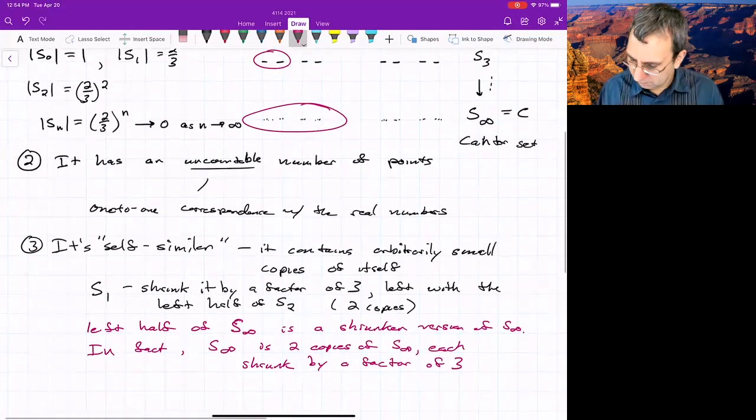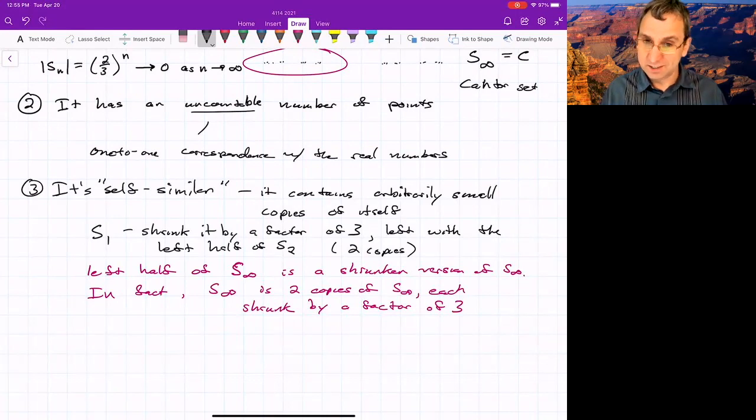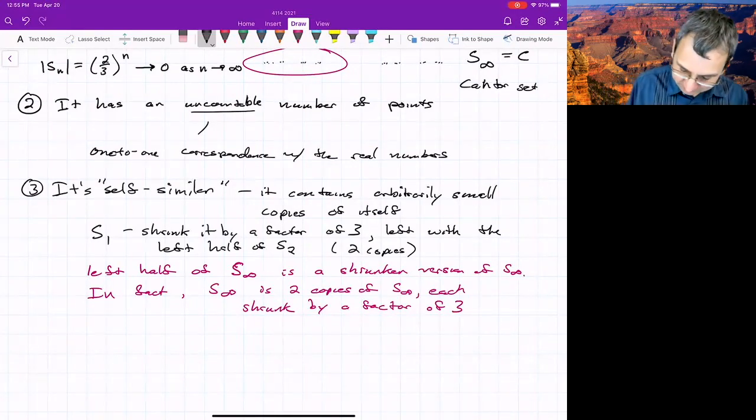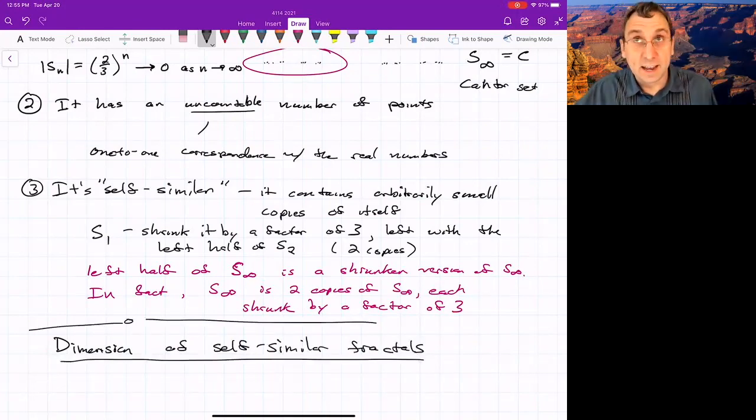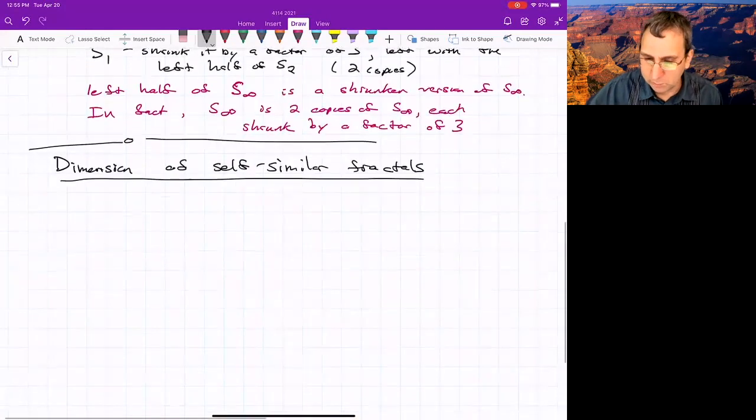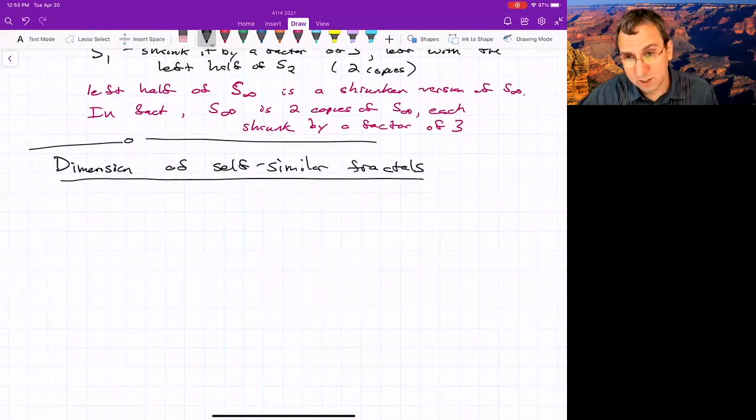Now, this is a collection of points, and we can talk about what its dimension is. So let's get into this thing. Dimension of self-similar fractals. And that's not redundant. You don't need to have self-similarity to be a fractal, but the common examples we speak of do. But we'll get to some that do not.